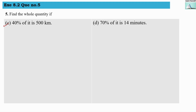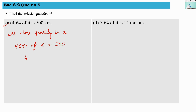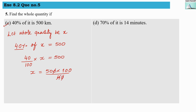The third problem: 40% of it is 500 kilometres. Let the whole quantity be x. So, 40% of x equals 500 kilometres. Converting percentage to fraction form: 40 divided by 100, multiplied by x, equals 500. Therefore x equals 500 multiplied by 100 divided by 40. We cancel the zeros, and 25 times 50 gives us 1250. So the answer is 1250 kilometres.